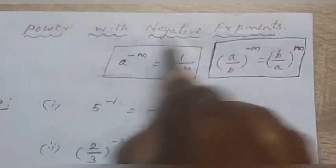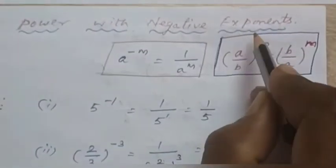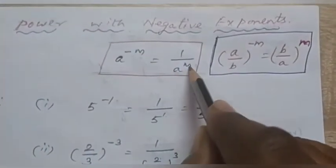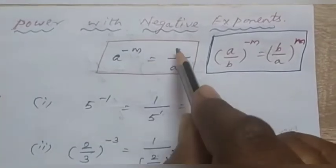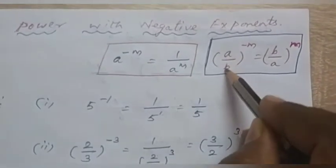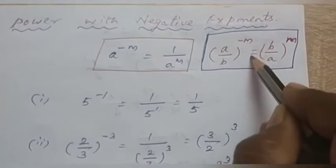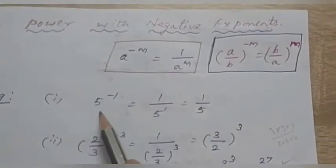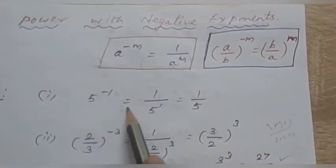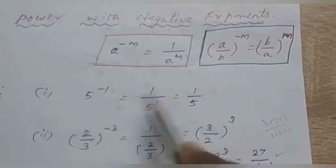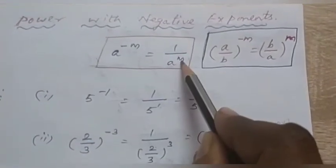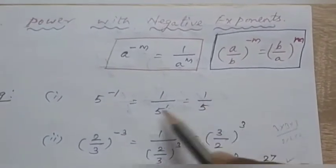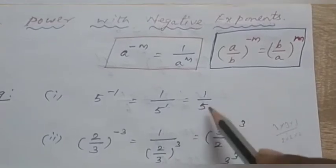The seventh law is power with negative exponents. The formula is: a power minus m equals 1 divided by a power m. Also, a by b whole power minus m equals b by a whole power plus m. For example, 5 power minus 1 equals 1 divided by 5 power 1, which is 1 divided by 5.